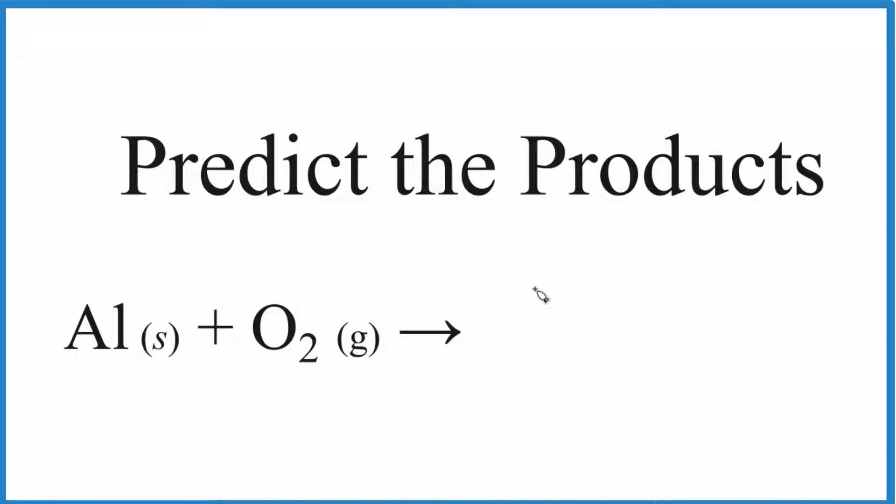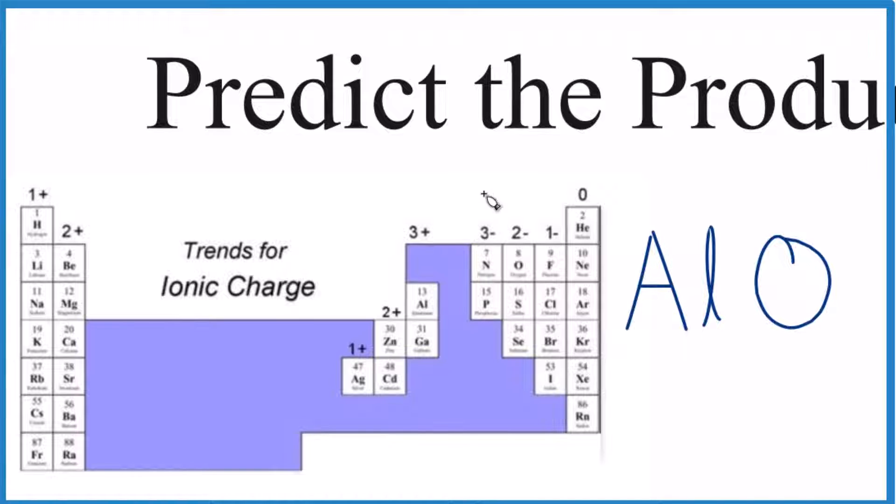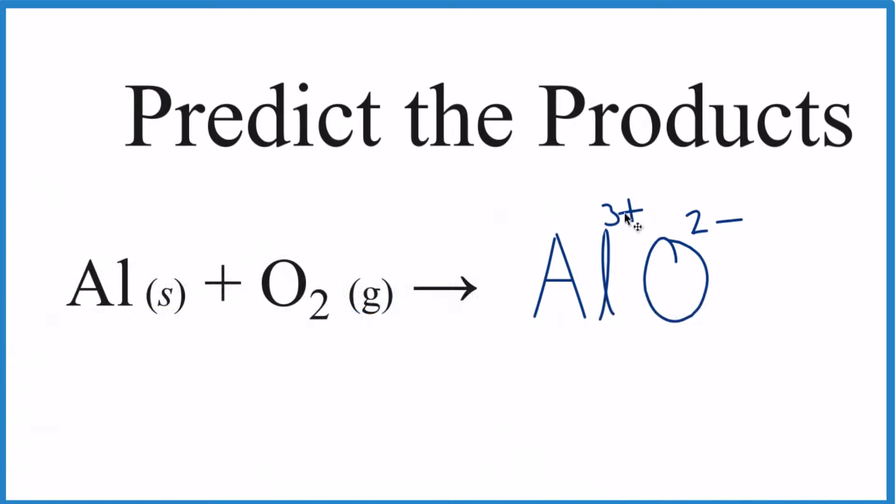But this is an ionic compound, so we need to make sure the charges between aluminum and oxygen are balanced. We can go to the periodic table and see that aluminum has a 3+ ionic charge, and oxygen has a 2- charge. Right now, the 3+ and 2- are not balancing out.